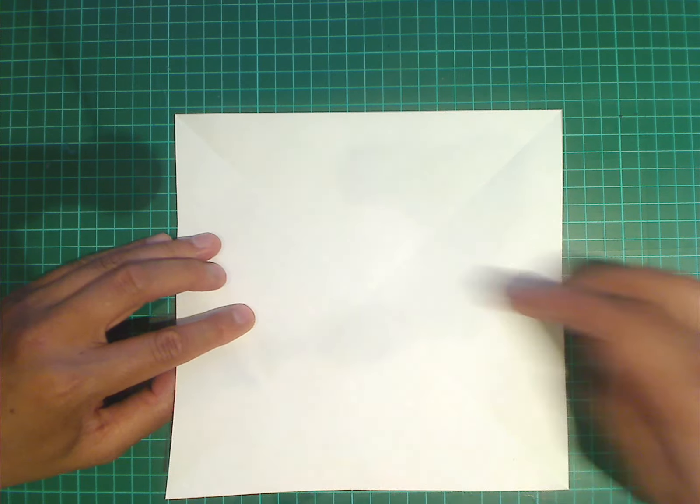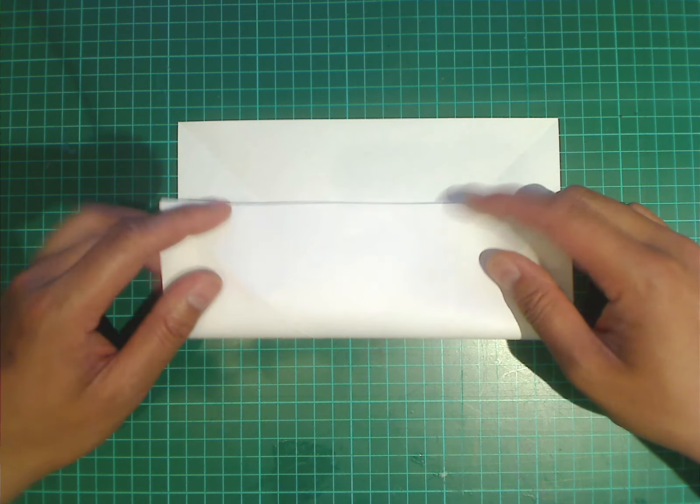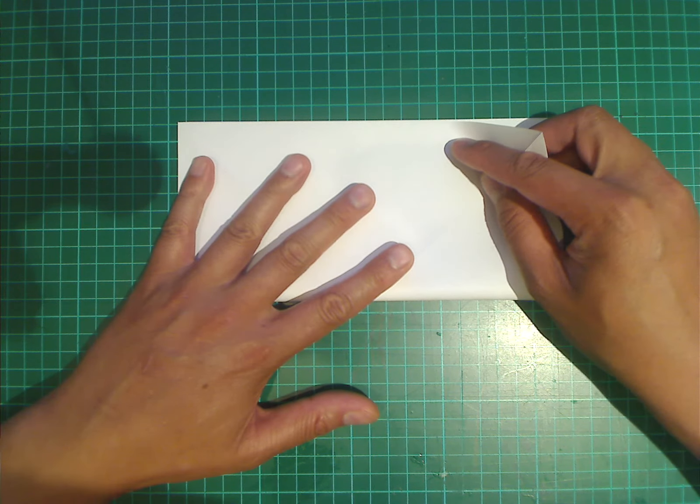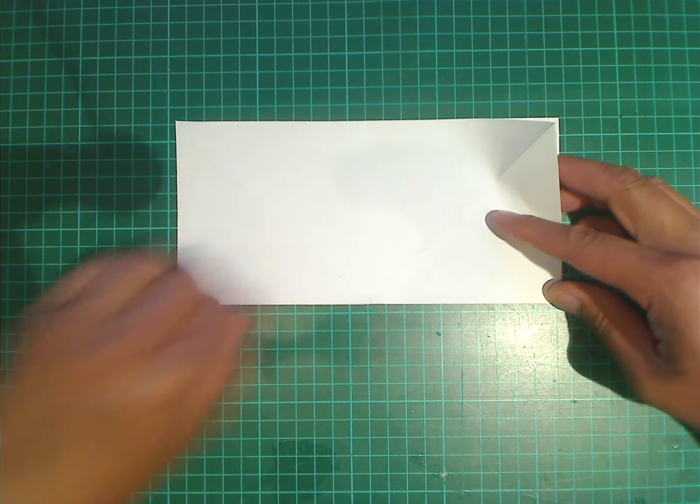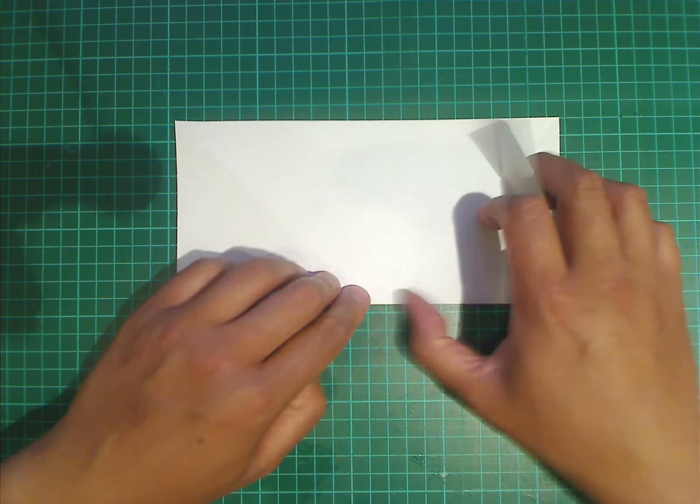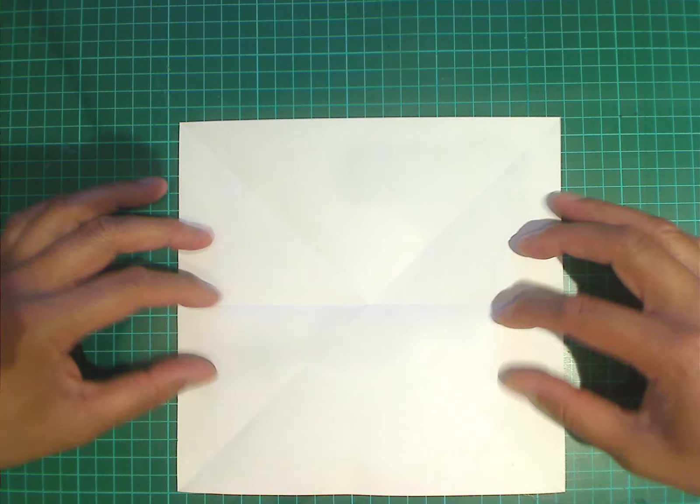Now we're going to do the horizontal. So again, fold the top edge and the bottom edge together. And then open it back up.